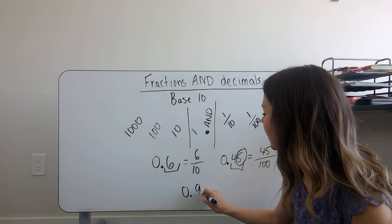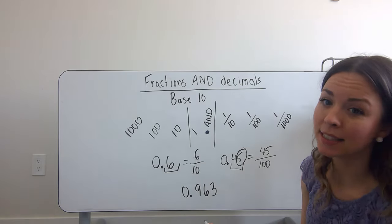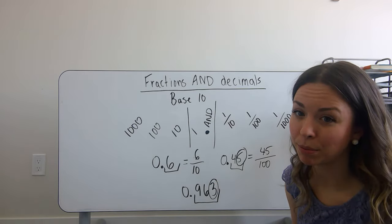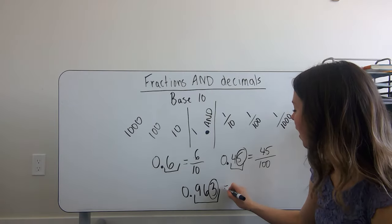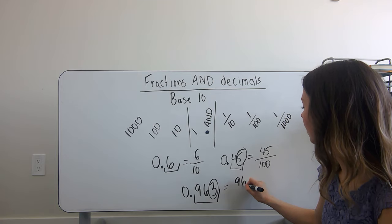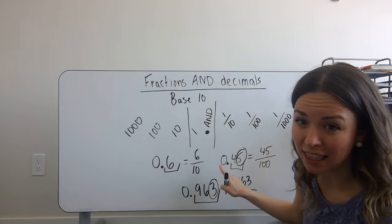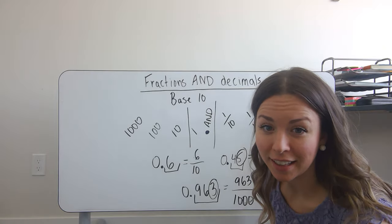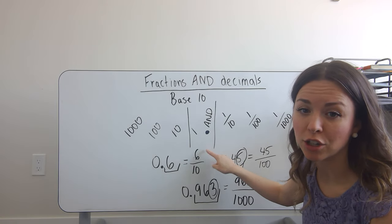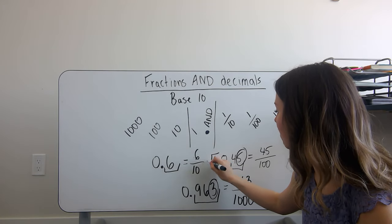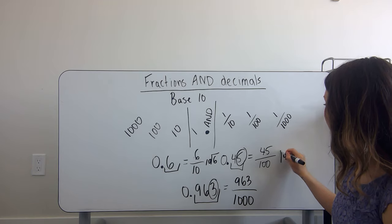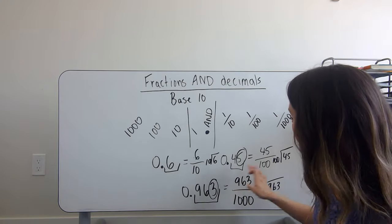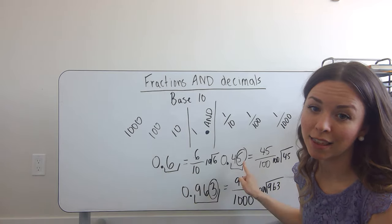If I have 0 and 963 thousandths, I know that because I say the number by itself — 963 — and then say the last place value, thousandths. That means I'm going to have 963 in my numerator, and since I said thousandths, I'm going to have 1,000 in the denominator. If you use a calculator, it's actually cool because our fractions are also division: 6 divided by 10, 45 divided by 100, 963 divided by 1,000. If you put those into a calculator, it will give you these decimal values.